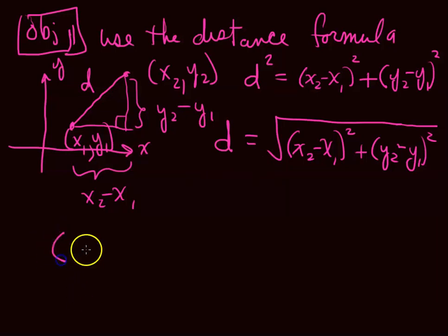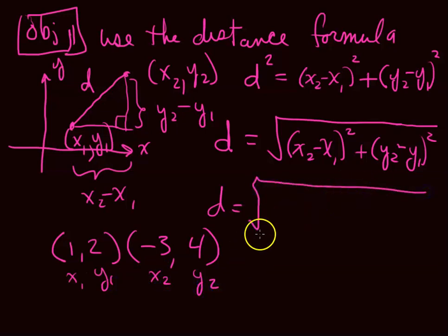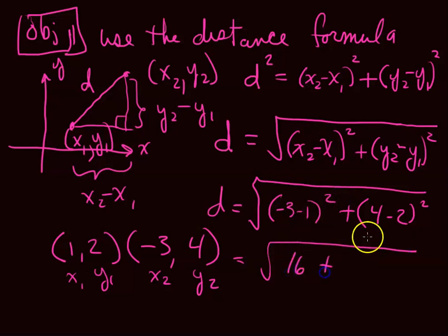Suppose you have two points. Pick a point: 1, 2, and say negative 3, 4. So the distance would be, I'm going to call this the x sub 1 and x sub 2, or y sub 1 stuff, and the x sub 2 and the y sub 2 stuff. So it's the square root of negative 3 minus 1 squared, plus 4 minus 2 squared. So that's the square root of, this is a negative 4 squared is 16, plus, this is 4 minus 2, which is 2 squared, which is 4, and we get the square root of 20.